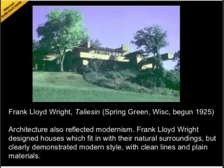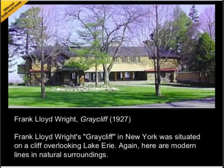Architecture also reflected modernism. Frank Lloyd Wright designed houses which fit in with their natural surroundings, but clearly demonstrated modern style with clean lines and plain materials. Frank Lloyd Wright's Graycliff in New York was situated on a cliff overlooking Lake Erie. Again, here are modern lines in natural surroundings.